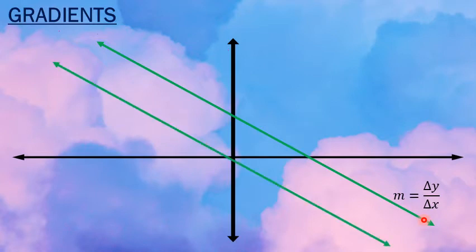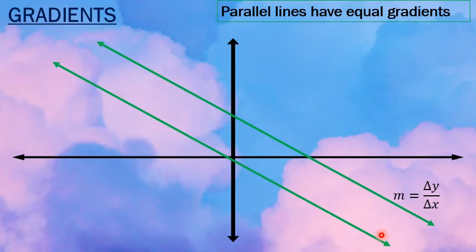Now, I want you to think about the gradients of parallel lines. Do you agree that whether you are walking left to right along this line or walking left to right along this line, you are decreasing in height at the same rate? So gradients, parallel lines, have equal gradients.